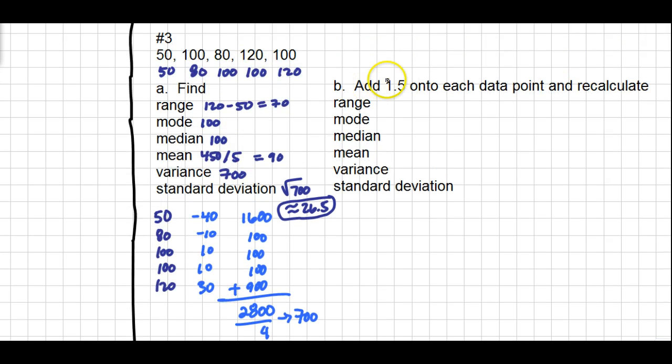Now we're going to take the data for part B and we're going to add a number on to all of the pieces of data. So my data changes to the list of 51.5, 81.5, 101.5 twice, and 121.5. Now let's recalculate all of the values and see how they are affected. The range is max minus min, so that's still 70. The mode is still the most often number, which is 101.5. The median is the middle, which is 101.5. The mean I am going to need to add these up, and when I do that I get 91.5.